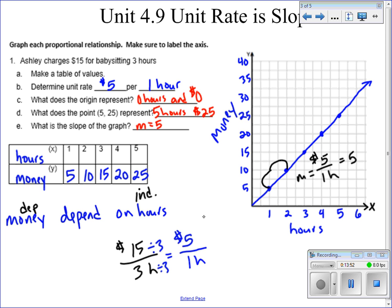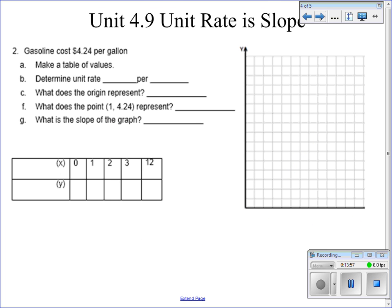All right, I hope that explains and starts to connect the dots between unit rates and slope and showing you that they're really just the same. There is another example here. I want you to take the time to do this example by yourself. Remember, go back in the video if you need to, to get some additional tips. But you've got $4.24 per gallon. The nice thing about this, if they give it to us as $4.24 per one gallon, it's already a unit rate.